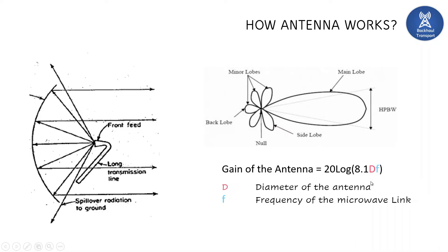Whenever the diameter of the antenna or the frequency of the link increases, the gain of the antenna also increases, resulting in a very narrow beam. If the diameter and frequency decrease, the gain reduces and you get a wider beam. A narrow beam width allows travel over longer distances and avoids interference, whereas a wider beam width creates interference and does not support longer distances.